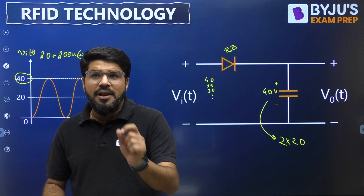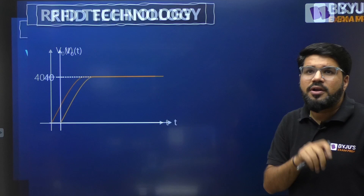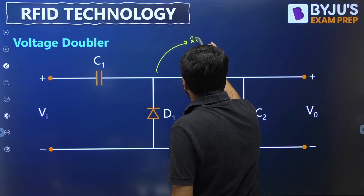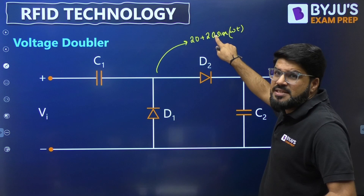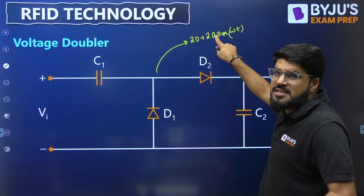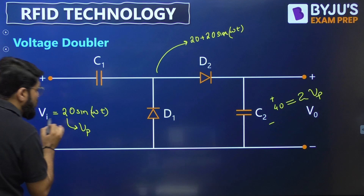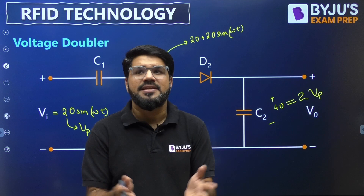Taking the clamper circuit and positive peak detector connected in cascade gives us a voltage doubler. The clamper produced 20 + 20 sin(ωt), and the positive peak detector detected the peak: 20 + 20 = 40, which is 2V_p. This circuit has converted the AC waveform to a doubled DC output. This DC output is then fed to the chip of the tag's antenna to activate it.